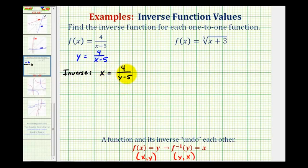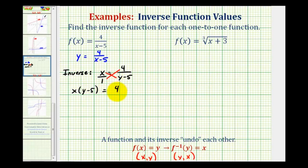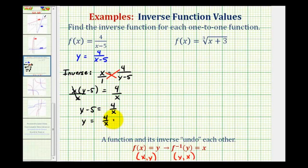To solve this equation for y, this is a proportion so we can put x over one and cross multiply. That means x times the quantity y minus five must equal one times four, so x times the quantity y minus five equals four. Then we divide both sides by x, leaving us with y minus five equals four divided by x. Then we add five to both sides and we'd have four divided by x plus five, which is our inverse function solved for y.